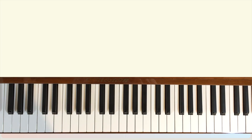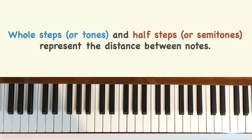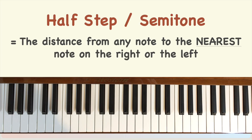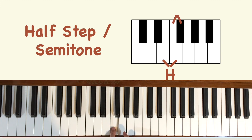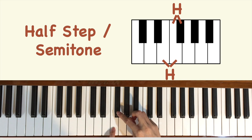What do we mean by whole steps and half steps? Whole steps and half steps represent the distance between notes. The distance from any note to the nearest note on the right or the left is called a half step. For example, the distance between E and F is a half step because there is no note between them. E and F are as close together as they can be, so a half step or semitone means the smallest distance between two notes. Similarly, the distance between F and F sharp or Gb is also a half step because there is no key between them.